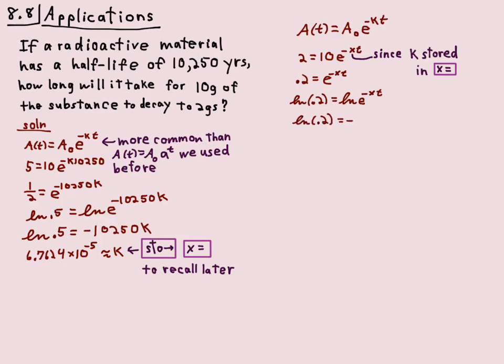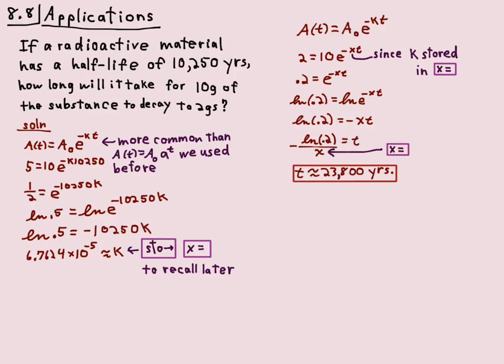We're solving for t, not x — x is the known number in the calculator. I divide both sides by −x, and when I type it in the calculator I use the x memory button. The calculator gives me the time. The problem should tell you where to round, but a reasonable level of precision is appropriate here.